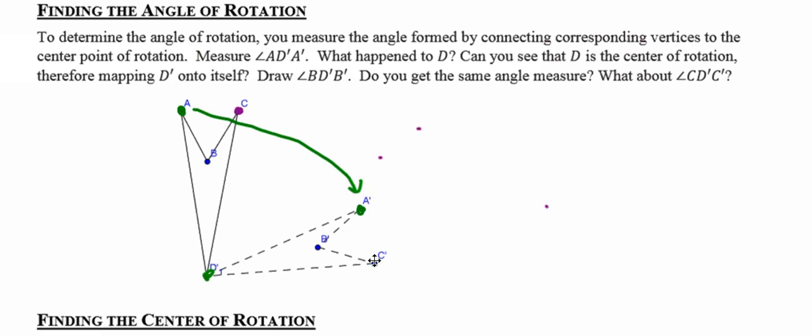C starts up here, ends up down here. So he travels along that purple arc. Notice that points A and C travel much further than point D, which doesn't travel at all under this particular rotation.